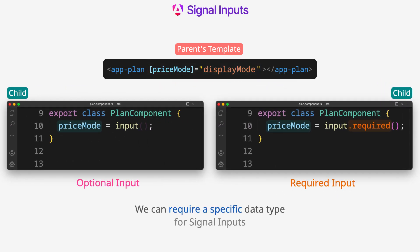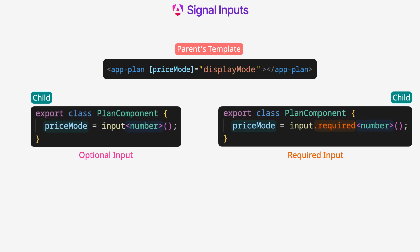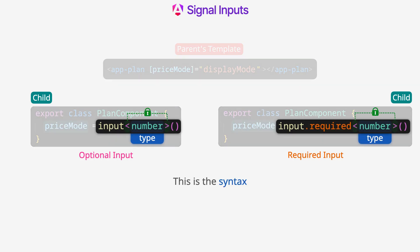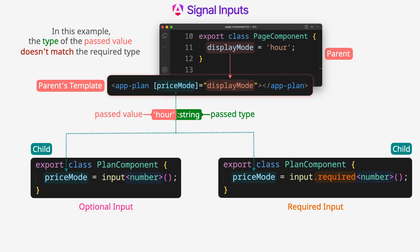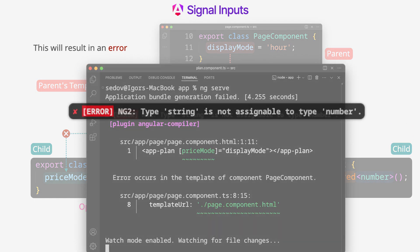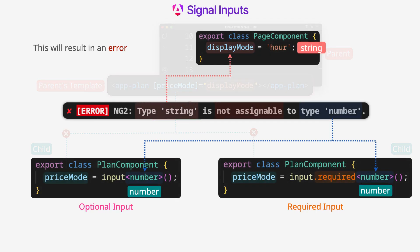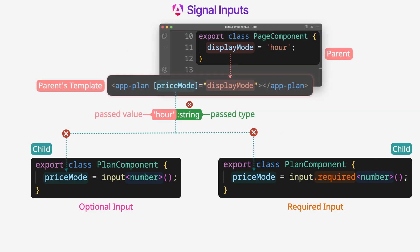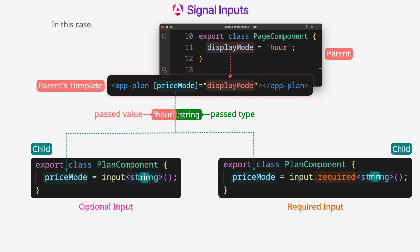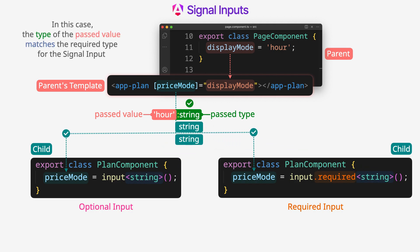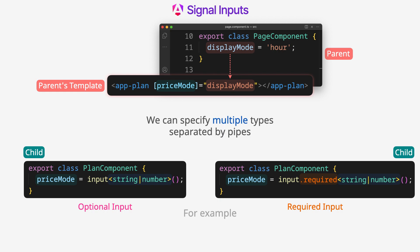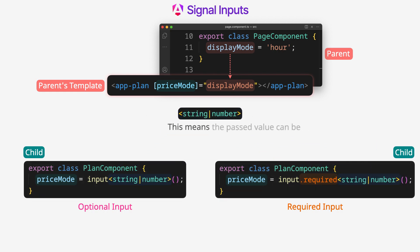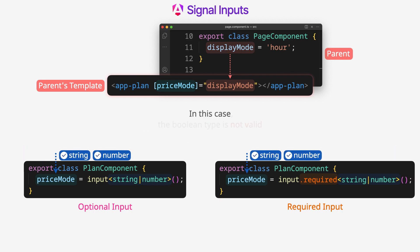We can require a specific data type for signal inputs. For example, the number type. This is the syntax for specifying a type requirement. If the type of the passed value doesn't match the required type for the signal input, this will result in an error. If we replace it with the string type, the type of the passed value matches and there's no error. We can specify multiple types separated by pipes — for example, string or number. This means the passed value can be a string or a number. A boolean type would not be valid in that case.